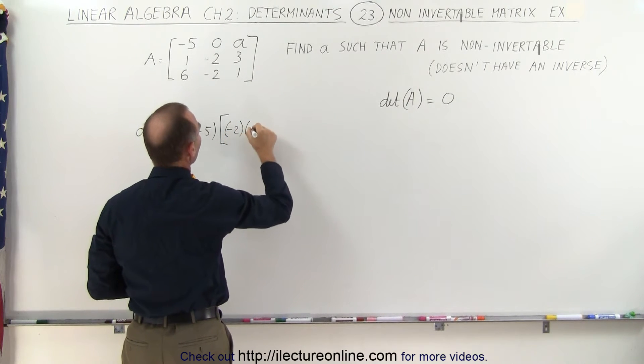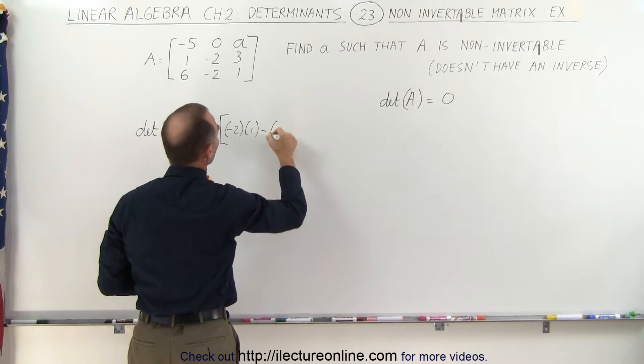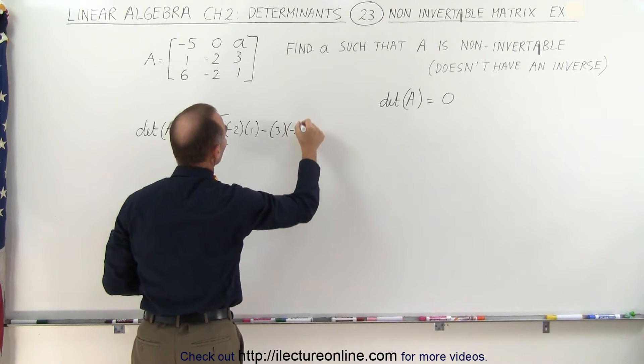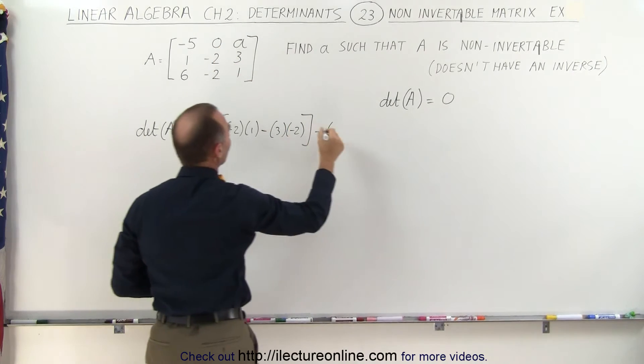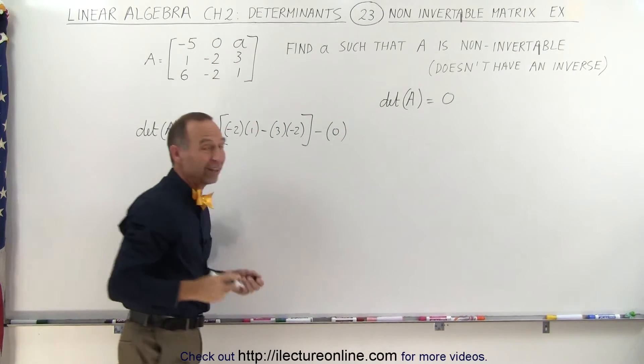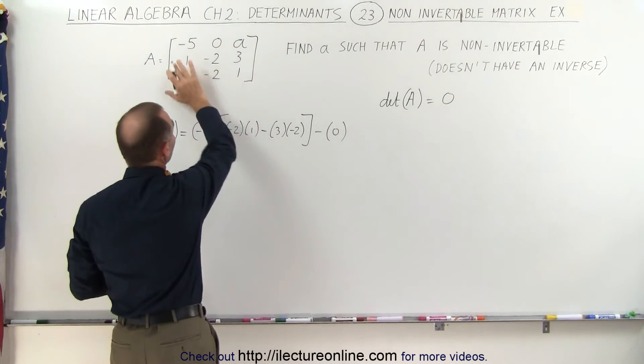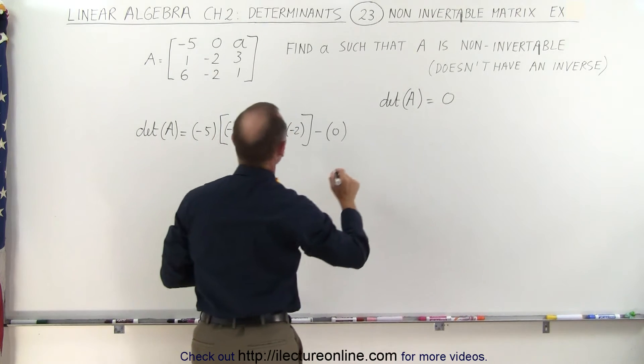Minus 2 times 1 minus 3 times minus 2, minus the second element which is a zero. Of course since that's zero, that means zero times whatever else we get is going to be zero.